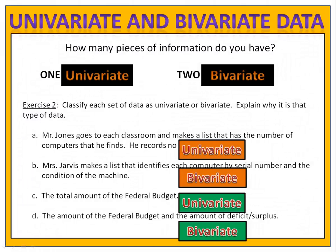Mr. Jones making a list of the number of computers is univariate. Mrs. Jarvis writing down the computer serial number and the condition of the machine is bivariate. The total amount of the federal budget is univariate — we only have one amount. The amount of the budget and the amount of deficit or surplus is bivariate.